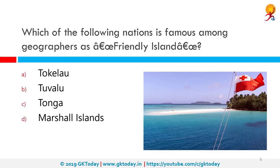Which nation is famous among geographers as a friendly island? The correct answer is Tonga. Tonga is a Polynesian country and archipelago comprising 169 islands, of which 36 are inhabited. It became known in the west as the Friendly Islands because of its congenial reception accorded to Captain James Cook on his first visit in 1773.